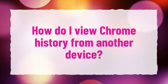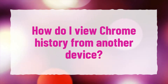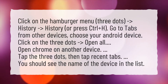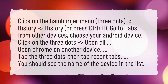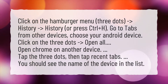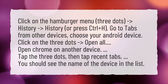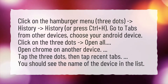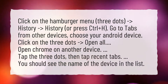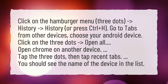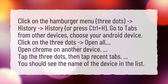How do I view Chrome history from another device? Click on the hamburger menu — three dots — go to History, or press CTRL plus H. Go to tabs from other devices and choose your Android device. Click on the three dots to open all. Open Chrome on another device, tap the three dots, then tap recent tabs. You should see the name of the device in the list.